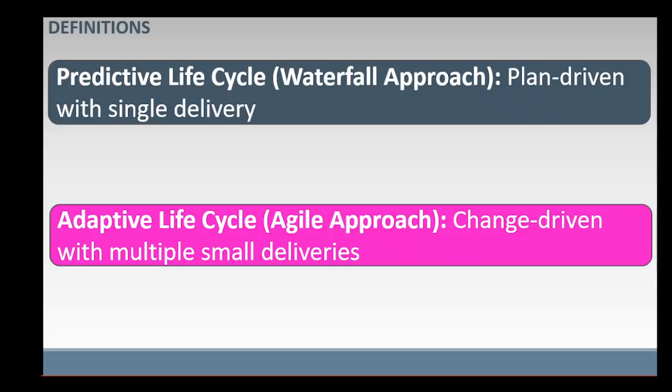Adaptive Lifecycle or Agile Approach is change-driven with multiple small deliveries. That is, a project plan is produced in each cycle of the project. The plan is changed frequently to respond to changing priorities, and increments or small sections of the product are created, changed, or refined and delivered across multiple cycles of the project.